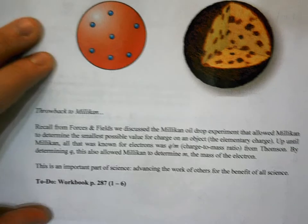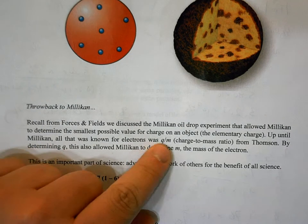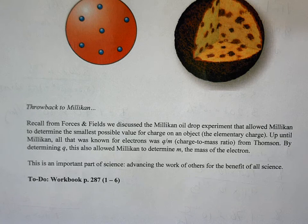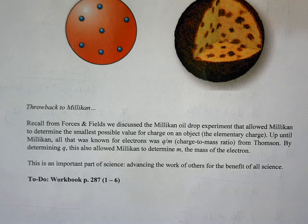To tie this together — Millikan was able to determine the elementary charge. Since Thomson had already established the charge-to-mass ratio q/m, once Millikan found q, this allowed determination of the electron's mass as well. Thomson's charge-to-mass ratio work opened many possibilities; without it, Millikan wouldn't have been able to find the mass. The lesson is: never discount what you do — it may have value you can't see at the present time.